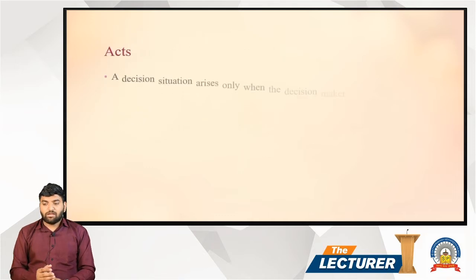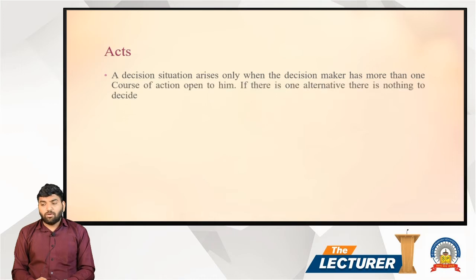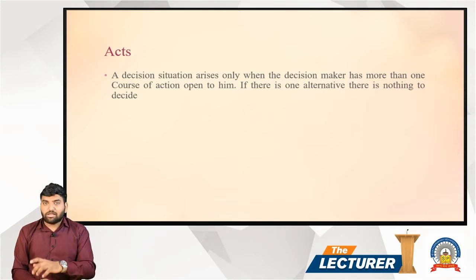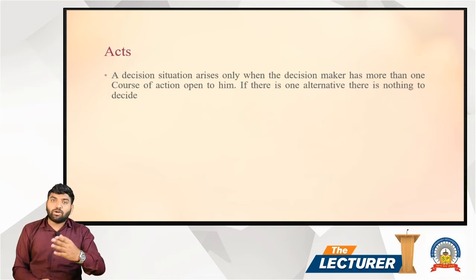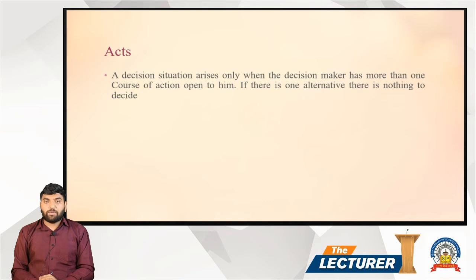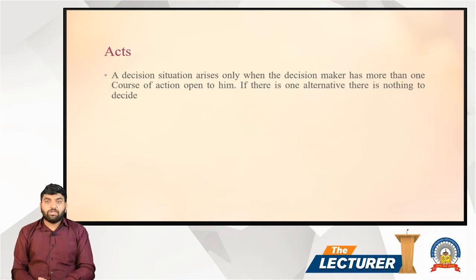The first element is Act. A decision situation arises only when the decision maker has more than one course of action open to him. If there is only one alternative, there is nothing to decide. For example, if you want to eat wafers, you have one or more alternatives — which type of wafer: salty, spicy, crunchy. You decide which flavor you want. These are called acts.